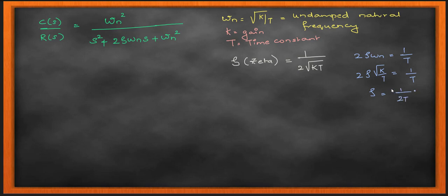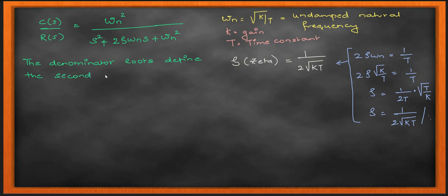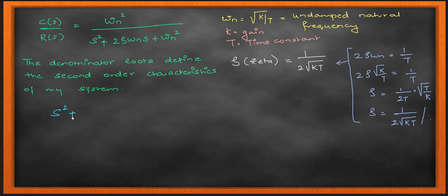The damping ratio zeta is given as 1 divided by 2*sqrt(kT). I get that by using 2*zeta*omega_n = 1/T and substituting omega_n = sqrt(k/T), giving zeta = 1/(2*sqrt(kT)). This can be asked in MCQ questions. Now, my C(s)/R(s) equals omega_n squared divided by s-squared plus 2*zeta*omega_n*s plus omega_n squared — that is the polynomial that defines my second order system's time response.